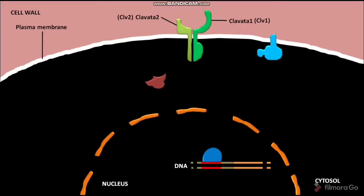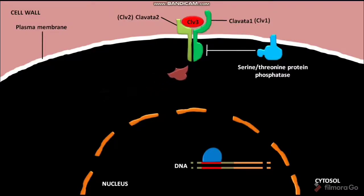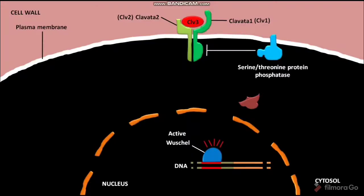In some cases, when Clv3 peptide binds to the Clv1 or Clv2 receptor on the surface of a target cell, a plasma membrane-bound serine-threonine protein phosphatase inhibits its phosphorylation. As a result, the Rho family GTPase cannot bind to the Clv1 or Clv2 receptor and remains in an inactive state. This inactive Rho family GTPase cannot induce the MAPK downstream signaling cascade that inhibits the gene-regulatory protein Hustel. As a result, Hustel becomes active, and the target genes that inhibit differentiation are transcriptionally active, so that differentiation stops.